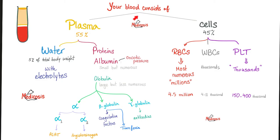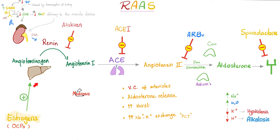Do you recall the constituents of your blood? Plasma and cells. The plasma is made of water and proteins — albumin and globulin. The globulins could be alpha, beta, or gamma globulins. The alpha globulins are divided into alpha-1 and alpha-2. Alpha-2 is angiotensinogen. Who makes all the globulins? The liver. So here is the lovely liver making the alpha-2 globulin known as angiotensinogen. Why call it angiotensinogen? Because -ogen means it will generate angiotensin.